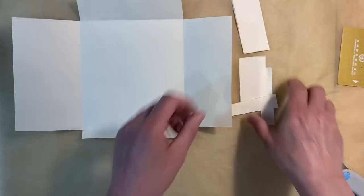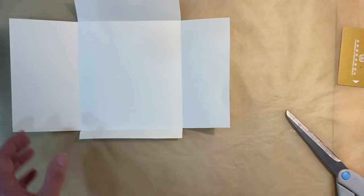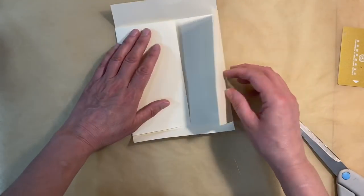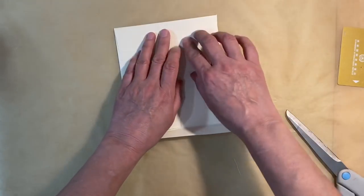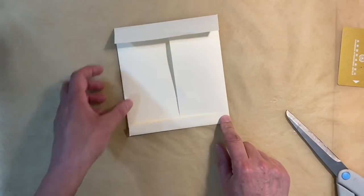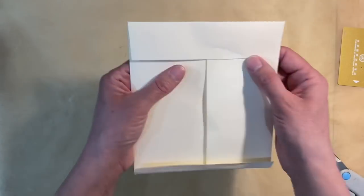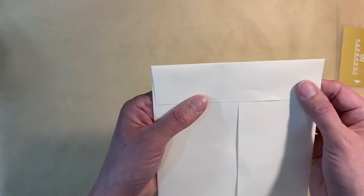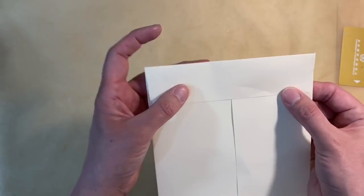There we go. So we can bin those, we don't need those anymore. And so when I fold my envelope together now you can see that it just makes it look a lot neater. Can you see? Because the pages are not hanging out over the edge.